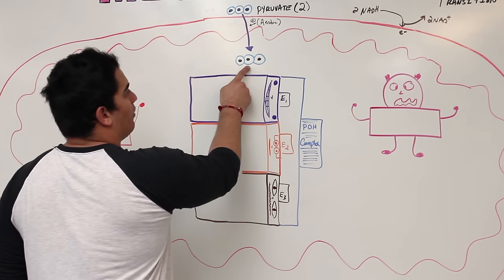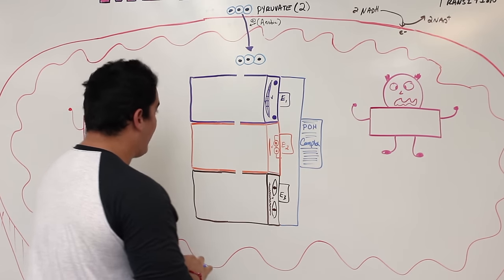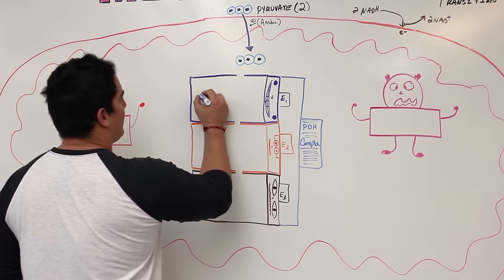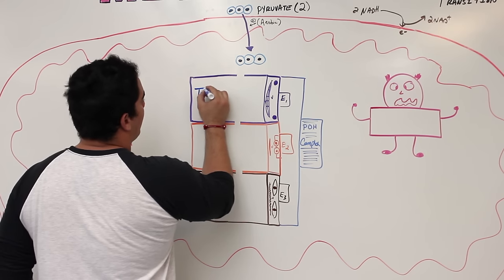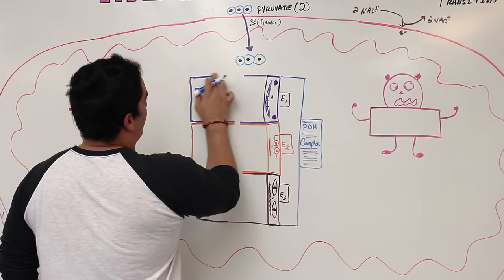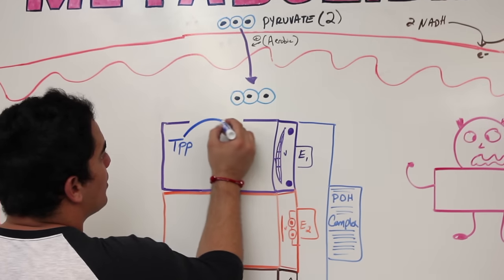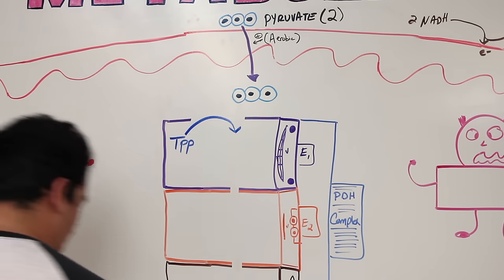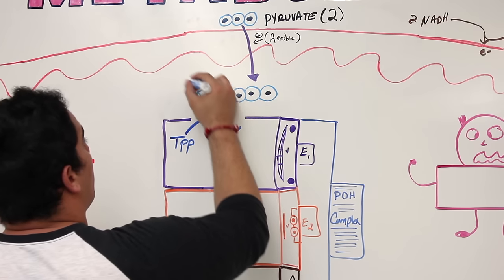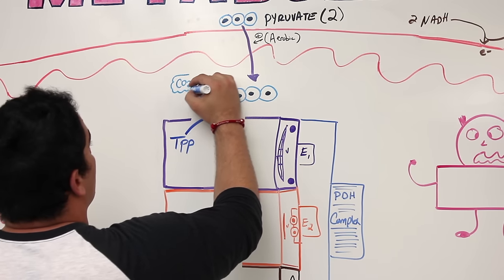In enzyme one, there is a very important vitamin called thiamine — specifically thiamine pyrophosphate. Thiamine pyrophosphate reacts with the pyruvate, and as a result of that reaction, a carbon is popped off in the form of CO2.